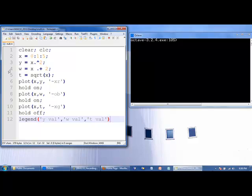In this example, we create three sets of data. We first create our x values, then we have y is equal to x squared, w is equal to x plus 2, t is equal to the square root of x. And so we can plot y versus x with a solid line with x at all the data points, and it will be a red line. Then we say hold on because we still have to plot the w and t values.